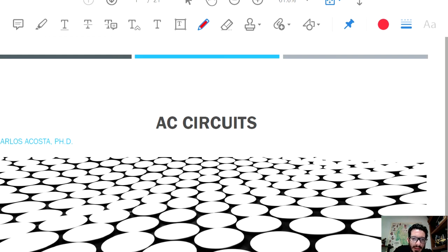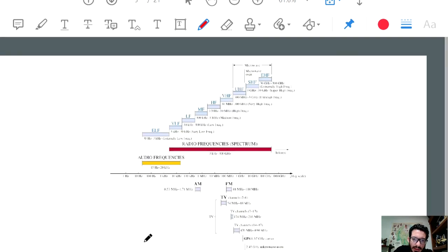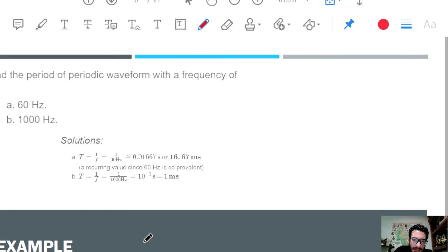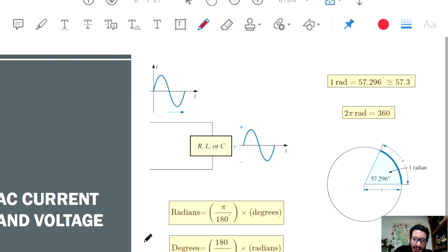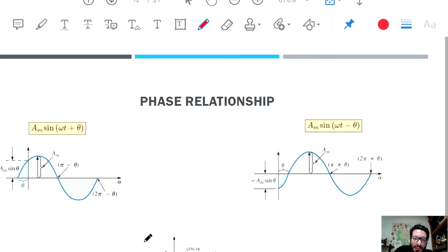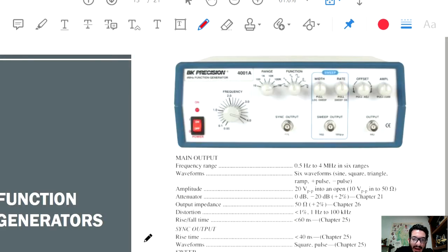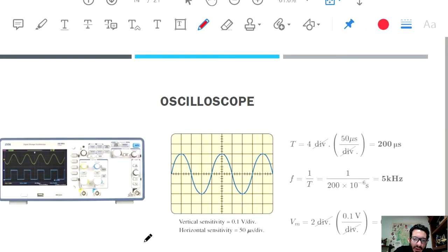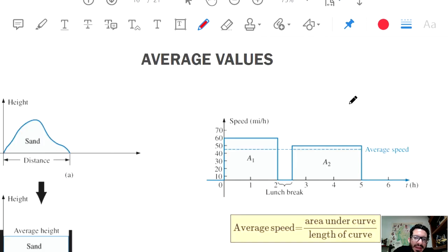Hello, I wanted to go back to the sine wave presentation because I did not complete the lecture on how to compute the average, or the RMS — the root mean square — which is a very important quantity to find the average value of a signal.